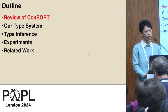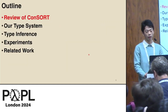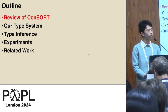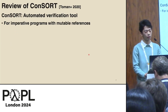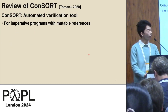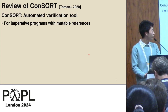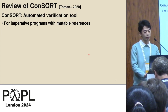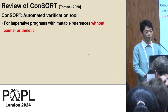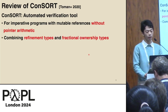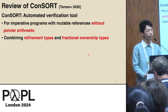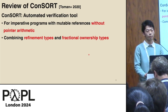This is an outline of the rest of this talk. First, let me review the idea of consort. Consort is an automated verification tool for imperative programs with mutable references, but without pointer arithmetic. It is based on a type system combining refinement types and fractional ownership types.